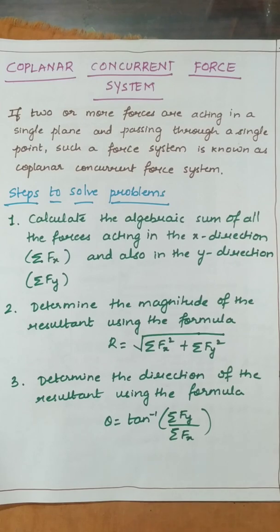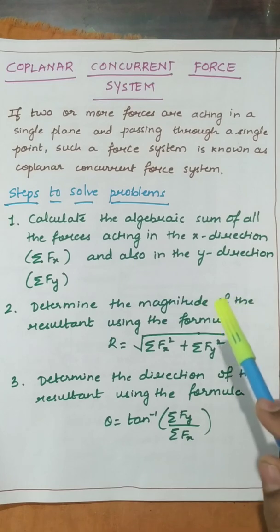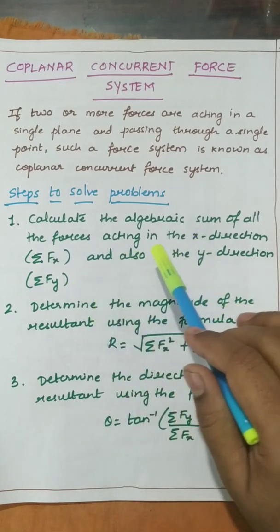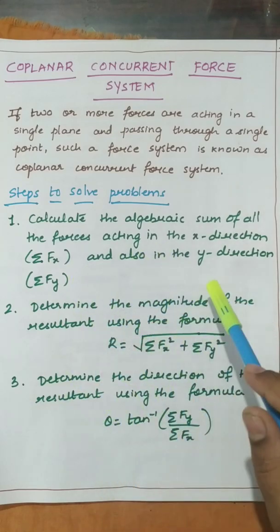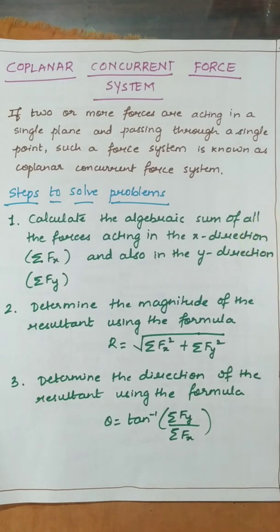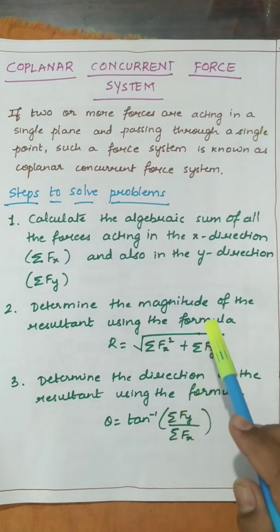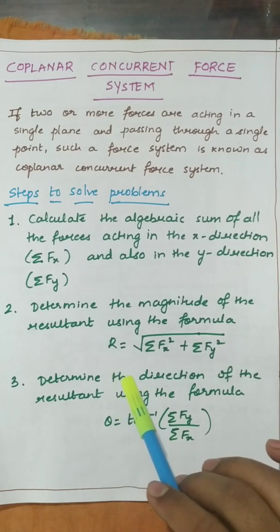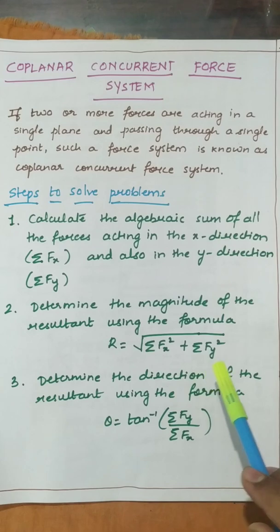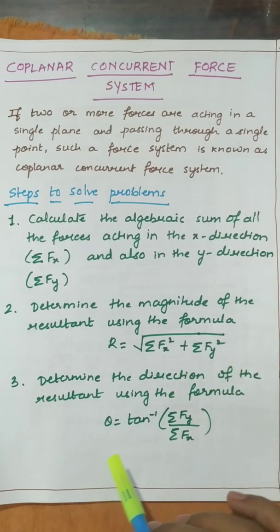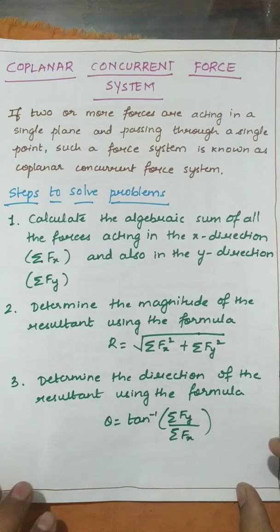First, let us learn the procedure and steps to solve the problems. The first step is to calculate the algebraic sum of all the forces acting in the x direction and in the y direction — that is sigma Fx and sigma Fy. The forces will be given at various angles; we have to resolve them in x and y directions. Then we find the magnitude of the resultant using R = √(sigma Fx² + sigma Fy²), and determine the direction using θ = tan⁻¹(sigma Fy / sigma Fx).